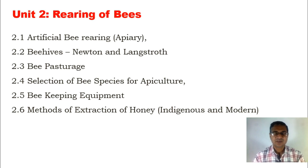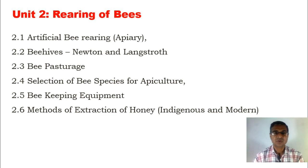Hello friends. Our discussion is continued in Unit 2, that is the rearing of the bees, which is a very important and informative aspect for beekeepers. Already discussed in this topic are artificial bee rearing, as well as the beehives, where we learned about the history and different types of beehives, along with modern beehives in the form of the Newton, Langstroth, and the ISI mark beehives. Now the third important topic, that is the bee pasture, is what we are going to discuss about today.